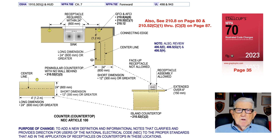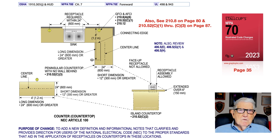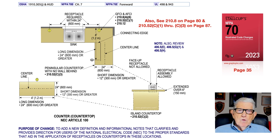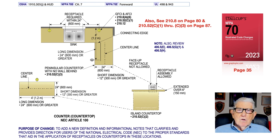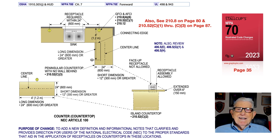One important point is that to be sharp on countertops, peninsulas, and islands, you should review UL-498 and UL-493, as well as Article 406, specifically 406.5E, 406.5 G1, and 406.5H. Reviewing these will clarify exactly what is required when receptacles are installed on countertops. For GFCI and AFCI protection details, see 210.8 A6, 210.52 C1, and 210.12.